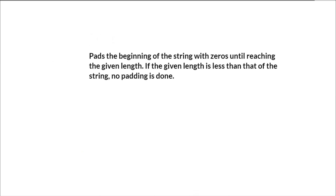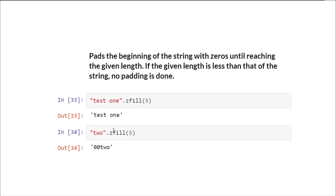Then we have zfill, which pads the beginning of a string with zeros until reaching the given length. If the given length is less than the length of the string, no padding is done. For example, if we check the length of this string and it is greater than 5, we get the original string unchanged. Whereas if the string length is less than the given number, it is padded with zeros at the beginning. This is helpful when writing hexadecimal numbers.